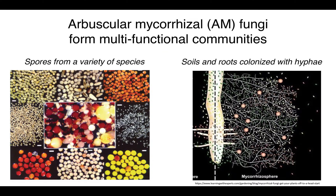The most common type are arbuscular mycorrhizal fungi, which I will refer to as AM fungi. AM fungi form multifunctional communities composed of functionally different species. By multifunctional, I mean AM fungi perform a variety of functions that benefit plants, including accessing different nutrient pools or performing additional services beyond nutrient delivery. These fungi can also protect plants from pathogens and increase plant drought resistance. But we're still trying to figure out the ecological importance of community composition in AM fungi. We know that plants receive more benefits by being colonized by a variety of different species, possibly because functionally different AM fungal species specialize in different services. But there are still many unanswered questions about the importance of AM fungal diversity.